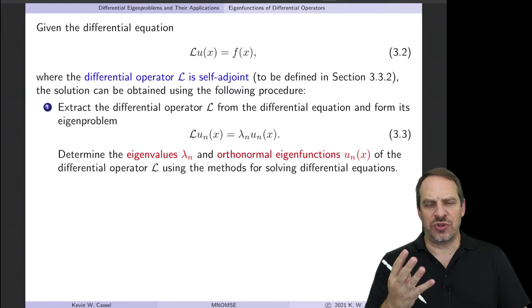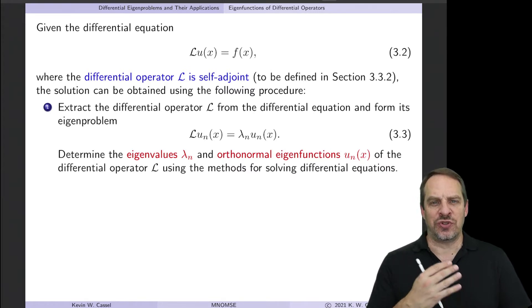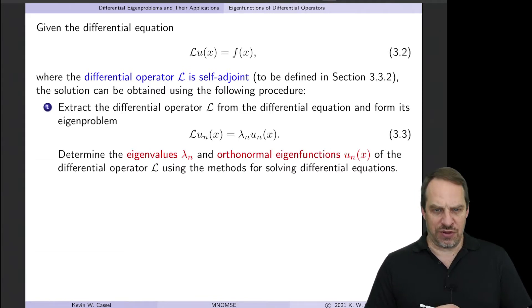We're going to walk through those same four steps that we did in Chapter 2 for solving AU equals B using the eigenvectors of A as basis vectors for the solution. We're going to do exactly the same thing here. So the first step is to take your differential operator L and extract it out of the differential equation and form its eigenproblem.